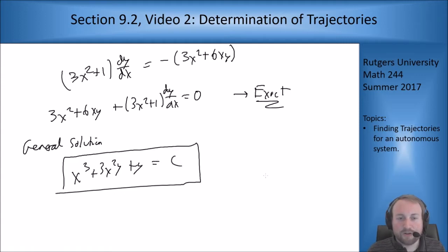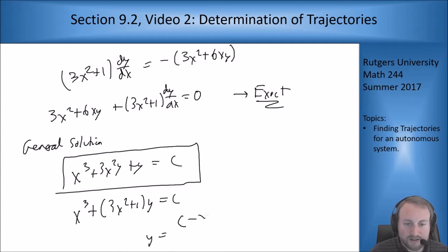So this implicitly gives us the curves of our trajectories. In this case we can actually solve this out for y on its own to get y as a function of x for our trajectories. x cubed plus (3x squared plus 1)y equals c, so then y equals (c minus x cubed) over (3x squared plus 1).